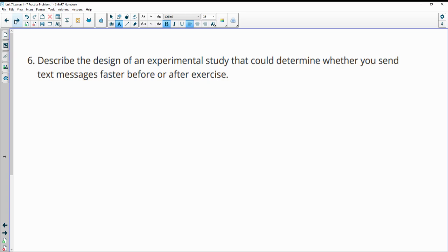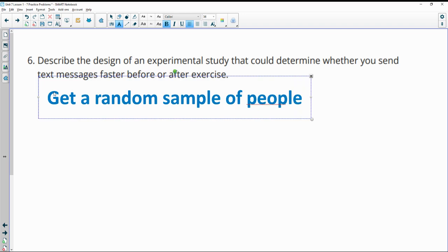Number six. Describe the design of an experimental study that could determine whether you send text messages faster before or after exercise. So you could get a group, get a random sample of people, then split them into two groups.